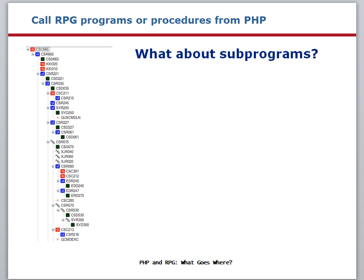But what about RPG sub-programs? The type of utility or stand-alone program that you purposely wrote to be called from another program, possibly at many points within a system. For example, in this call stack explosion, you may have identified several stand-alone programs that can be easily called. Those programs do not have any display file I/O, so it will be easy to work with them.